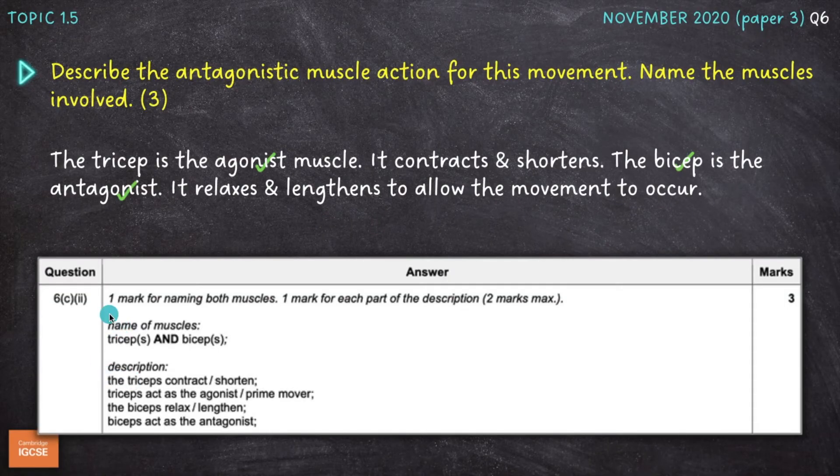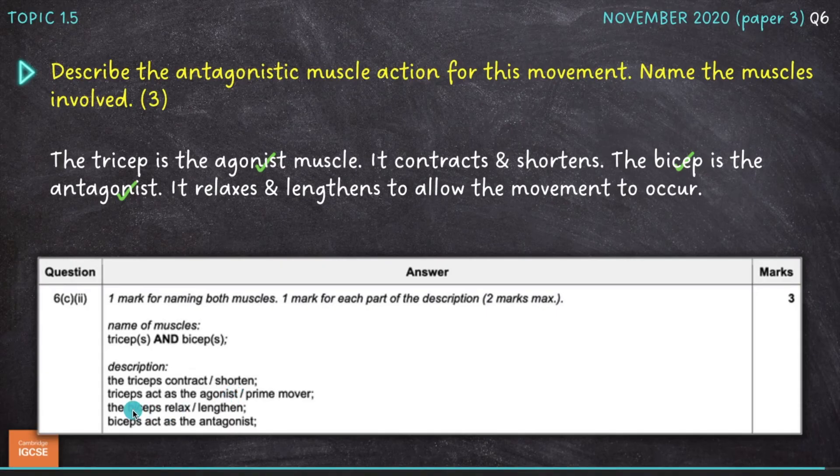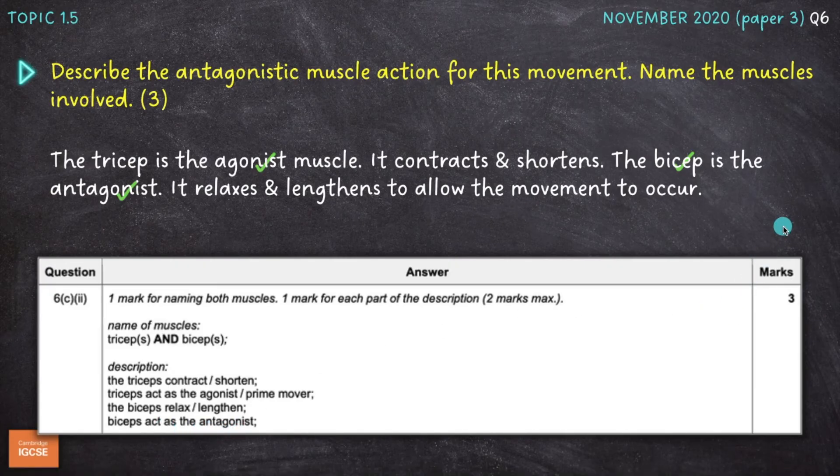If we look at the mark scheme here, we would have only got one mark for naming both of the muscles. So stating tricep and bicep would have got us one mark. That's why I've not given a mark for tricep here, only for bicep. Once I'd included both of those muscles I gave myself a mark. And then two marks for each part, or sorry, one mark for each part of the description. So one mark for any of these points, the triceps contract and shorten, the triceps act as the agonist or prime mover, the biceps relax and lengthen, and they are the antagonist muscle there as well.